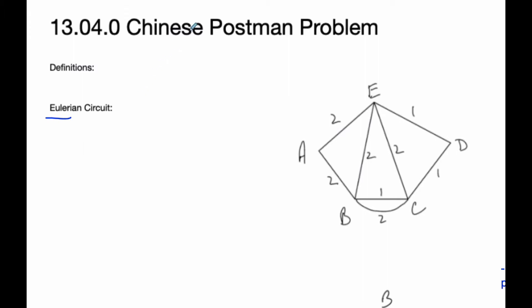So an Eulerian circuit is basically a circuit, so it means it starts and ends at the same point, that travels along each edge exactly once. So Eulerian circuits deals with edges. This is all about edges.